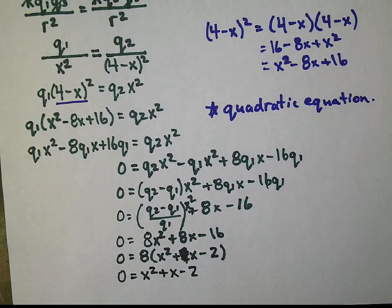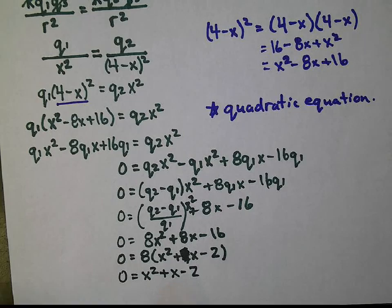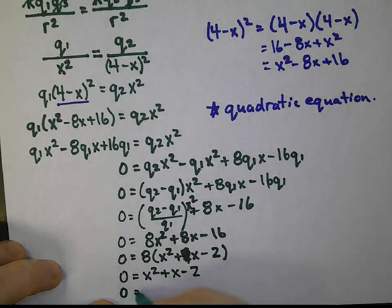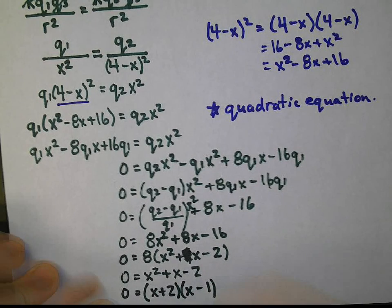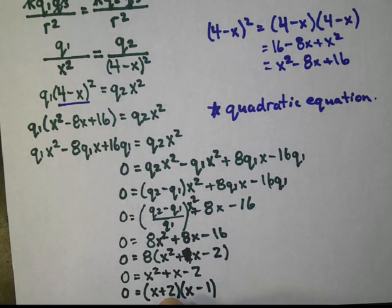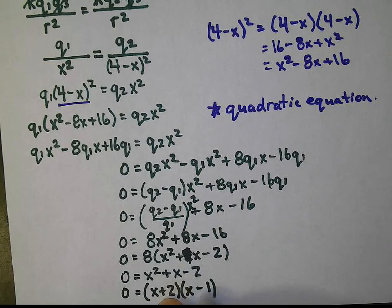This is a simple trinomial. We can factor this guy quite easily. That would give us x plus 2, x minus 1. The reason I know that is positive 2, negative 1 adds to 1. Positive 2, negative 1 multiplies to negative 2.